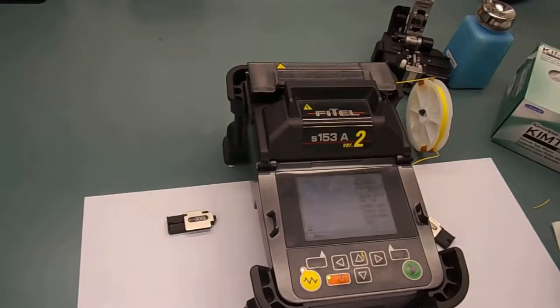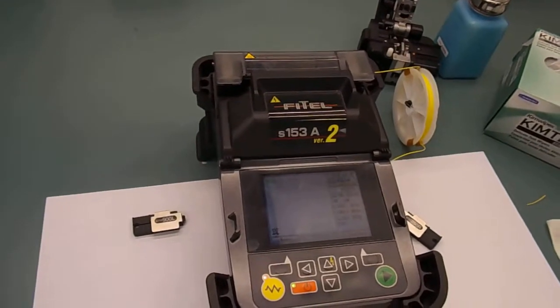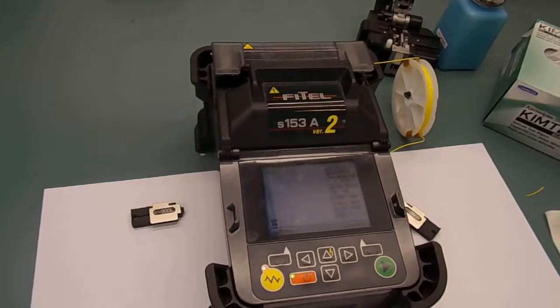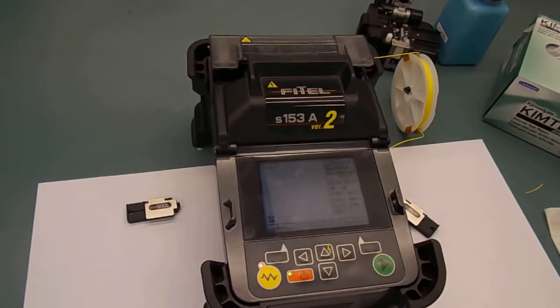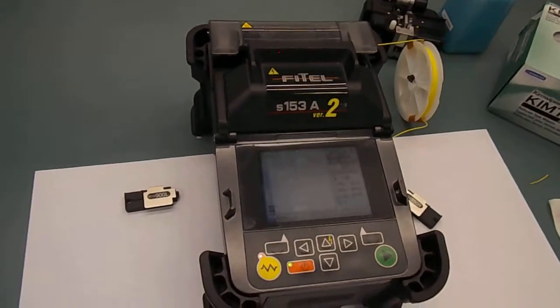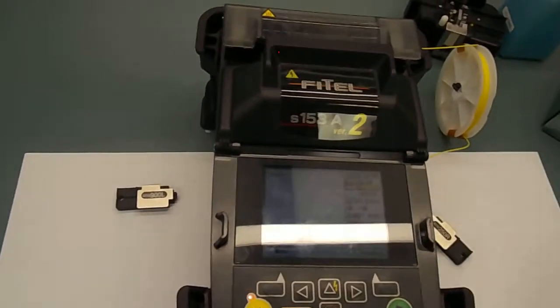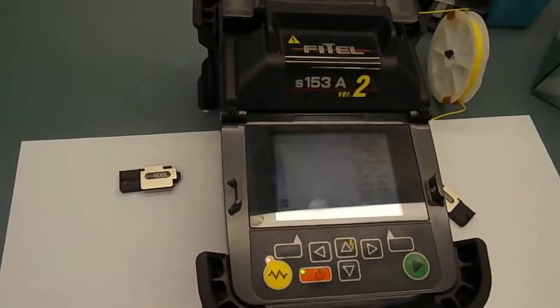And the shrink tubing takes about 20 seconds, maybe 30. And it'll give us a beep when it's done. There's a little gauge here. That gauge might not be equipped on all splicers.